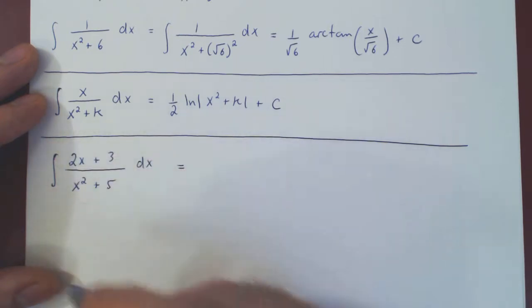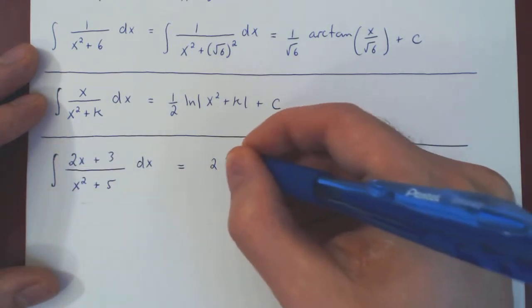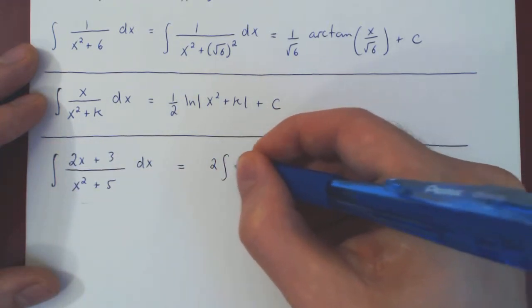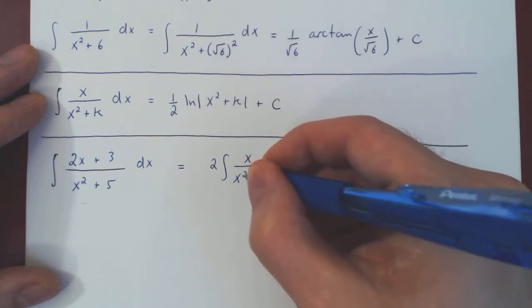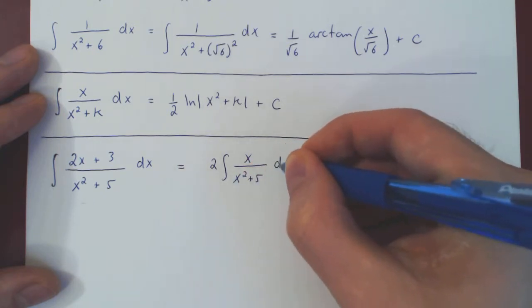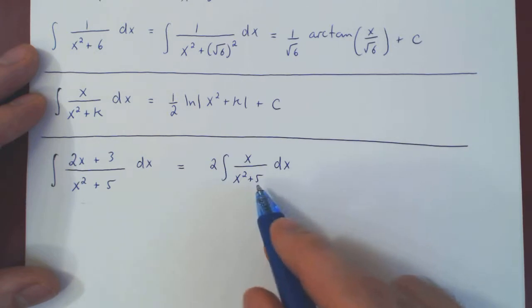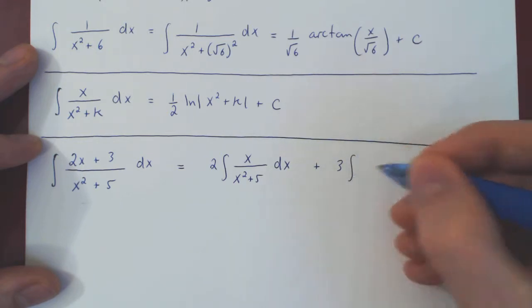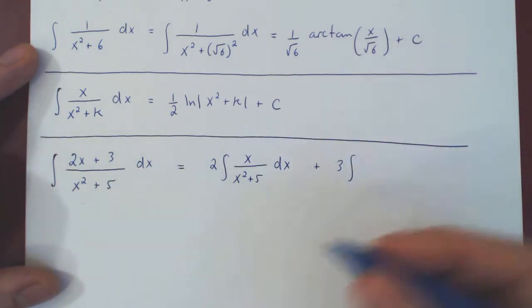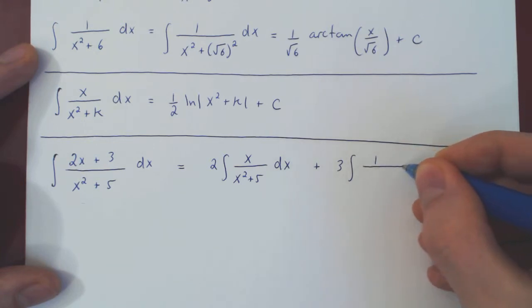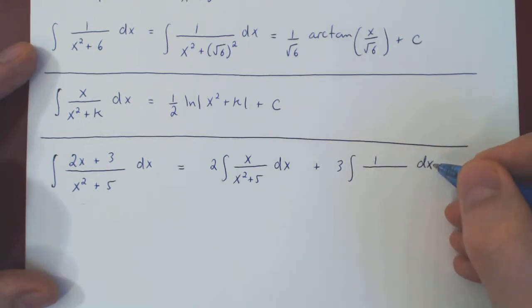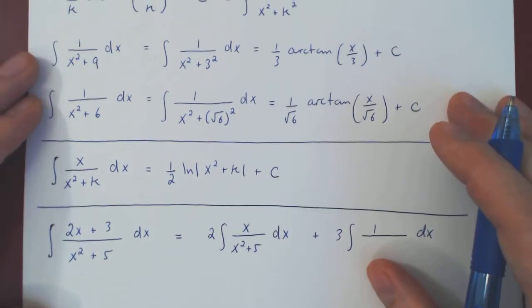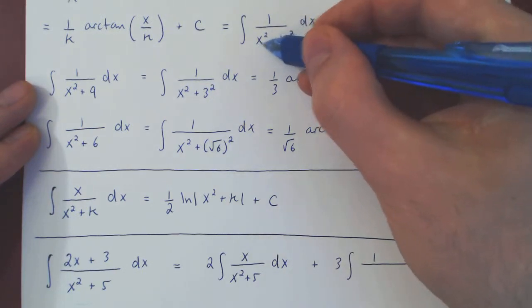So of course, I'll factor the 2 from the integral. So, integral of x over x squared plus 5. So this is our first special integral. Plus, I'll factor the 3, and I'll be left with 1 over x squared plus 5. And now we should recognize this as our second special integral. 1 over x squared plus 5. We want 5 to be something squared. So as before, we will simply rewrite 5 as the root of 5 squared.